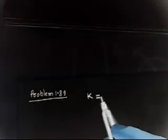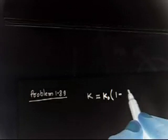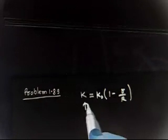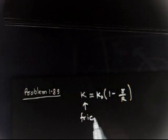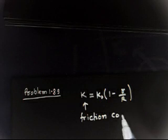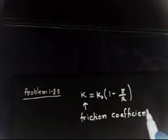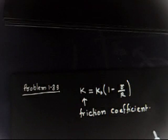Let us discuss problem number 1.89. This is an easy problem. It says: a cyclist rides along the circumference of a horizontal circular plane of radius R. The friction coefficient depends only on the radius r from the center and is given by k = k₀(1 - r/R), where k₀ is a constant. Find the radius of the circle for which the velocity is maximum and what is this velocity.